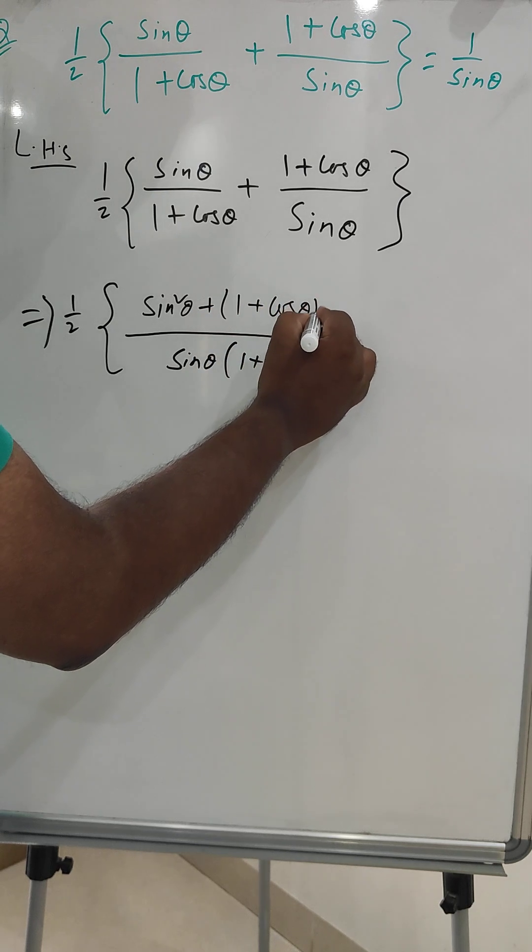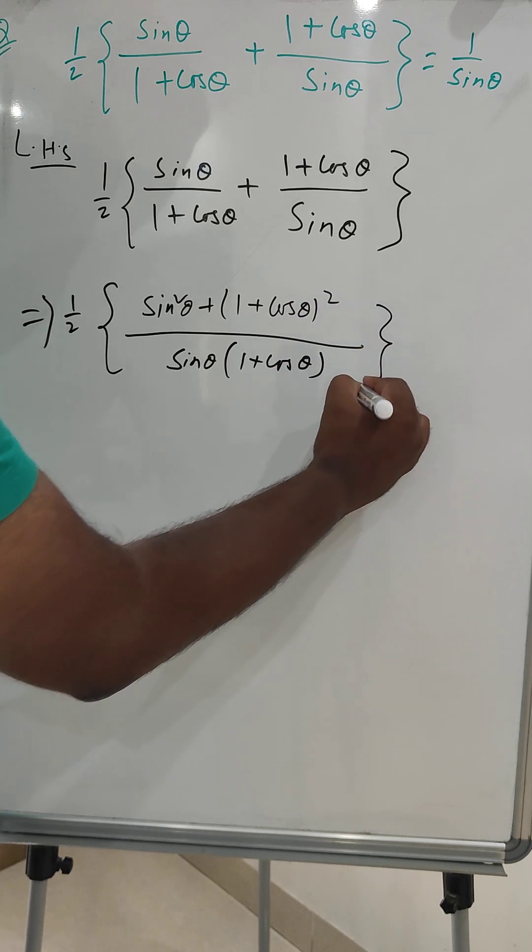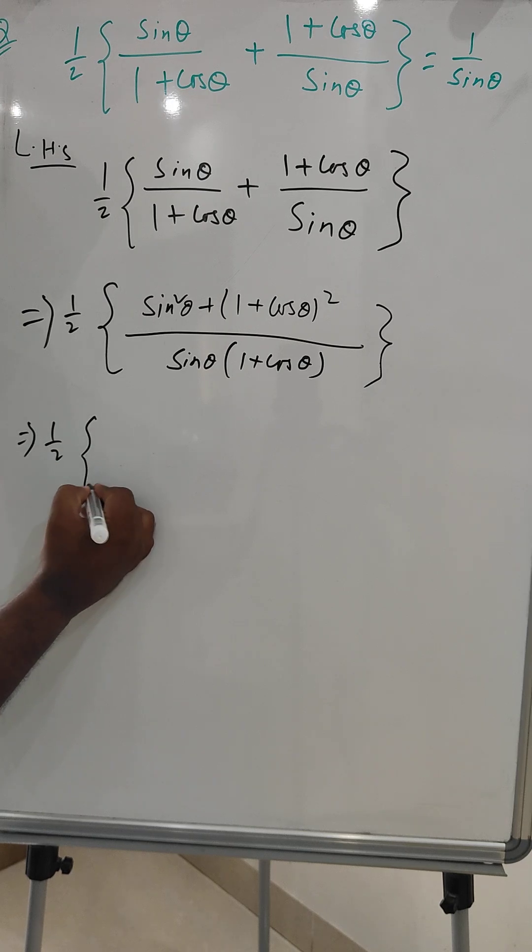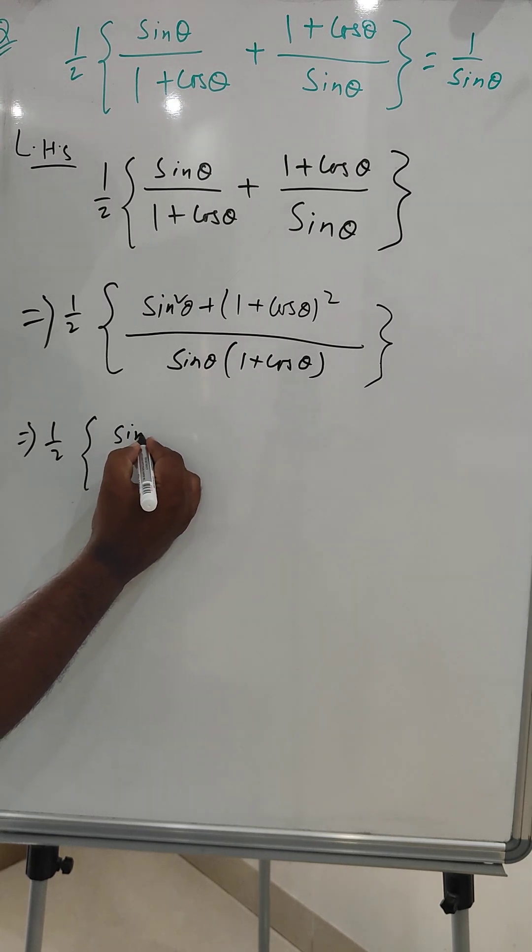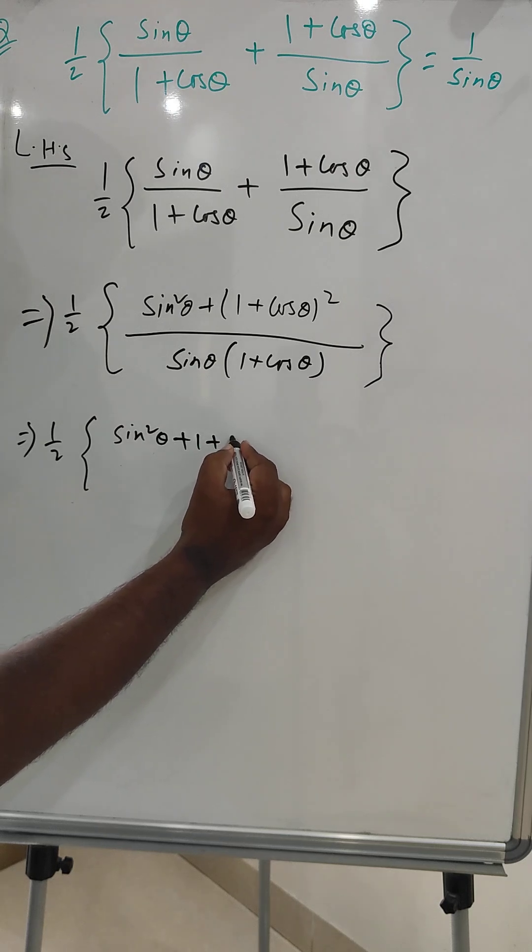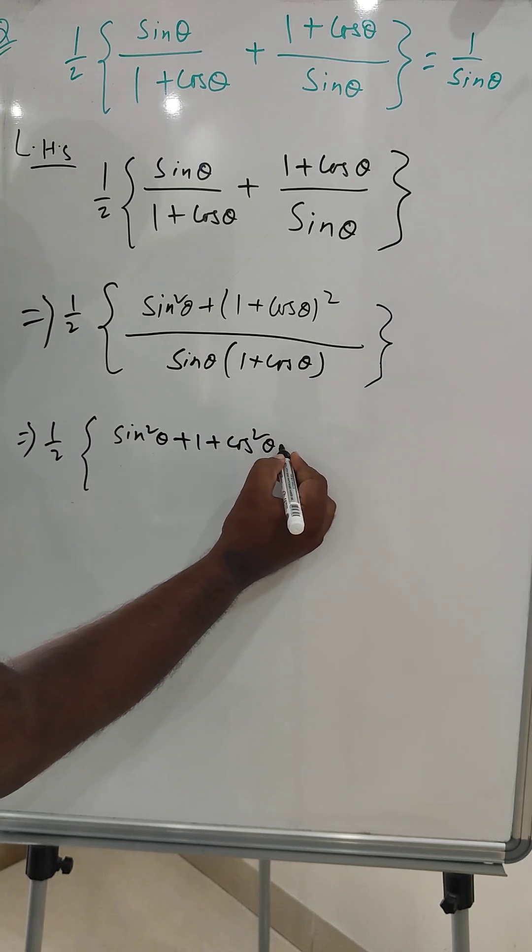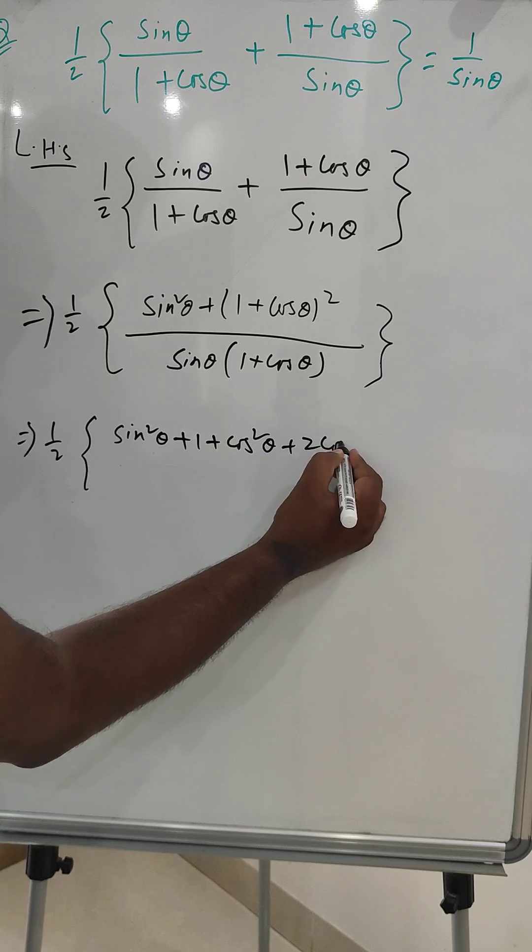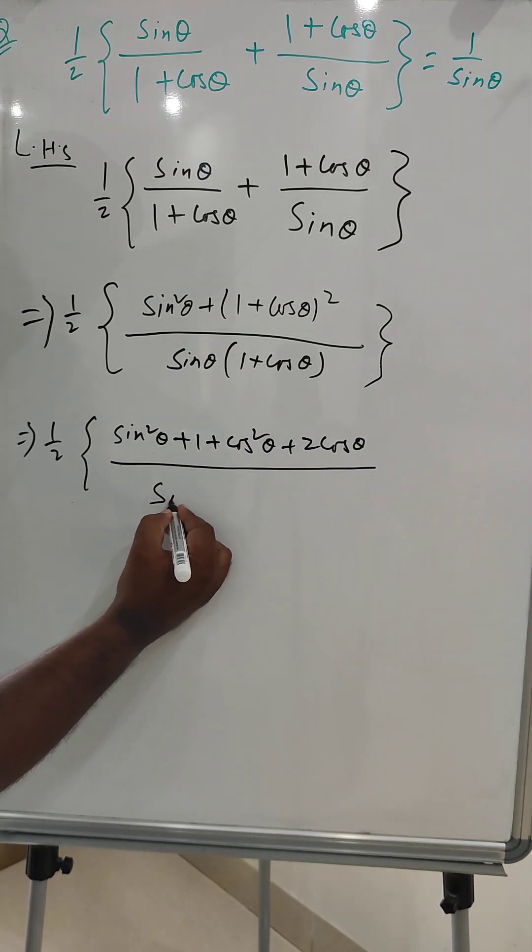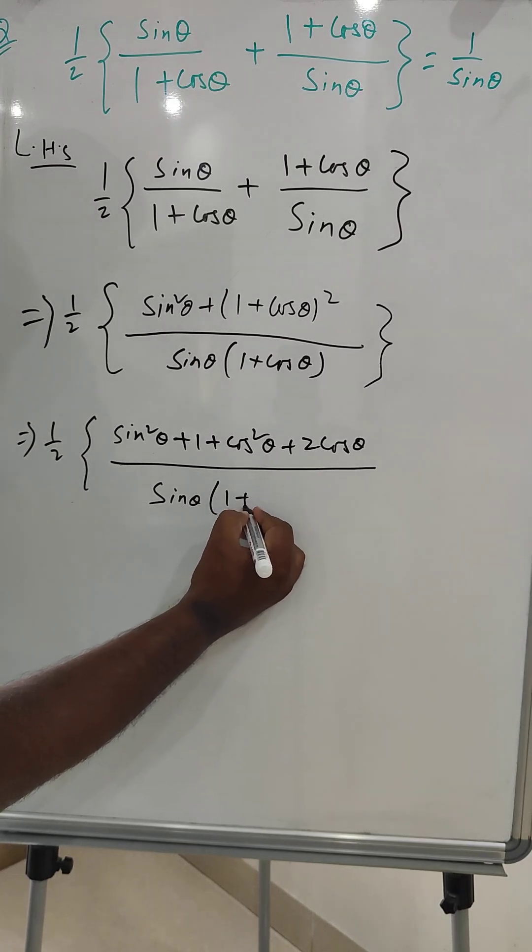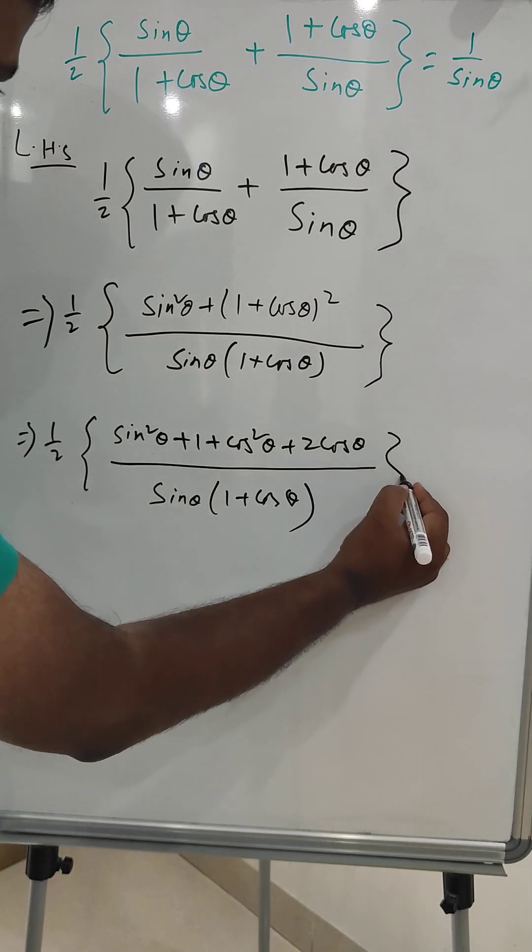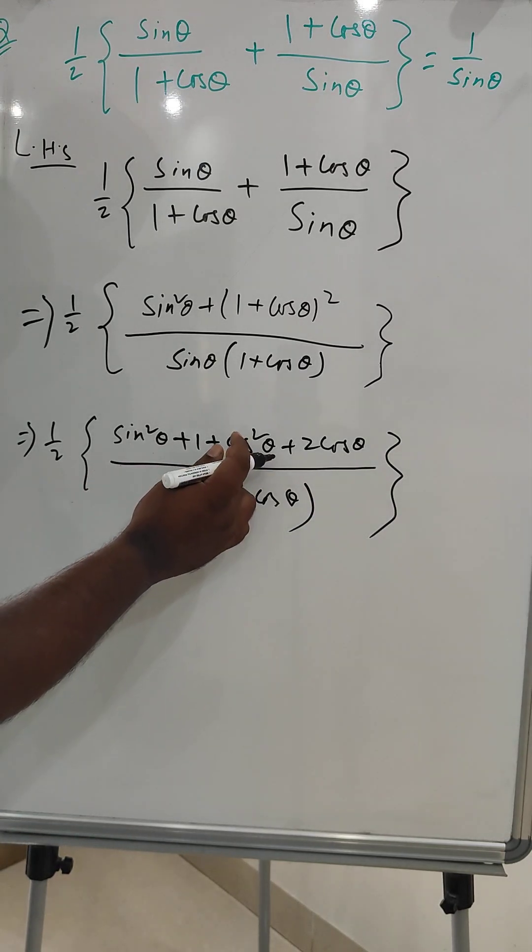Now next step: 1/2 times [sine squared theta plus 1 plus cos squared theta plus 2 cos theta] over [sine theta (1 + cos theta)]. This will become 1/2 times [1 plus 1 plus 2 cos theta] over [sine theta (1 + cos theta)].